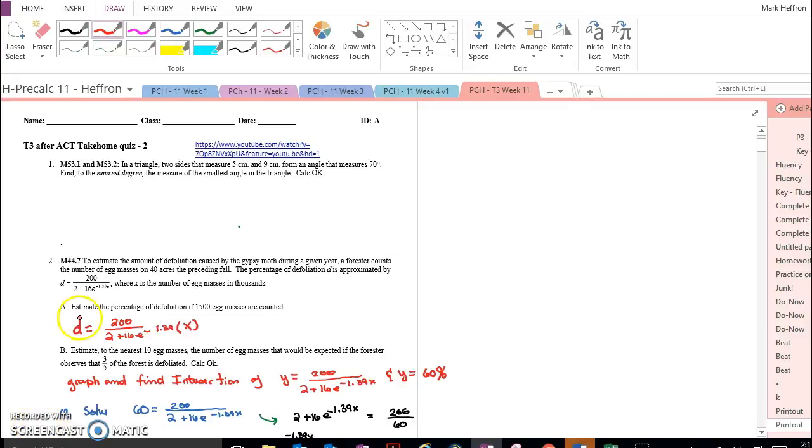In this problem, you've been asked to estimate the percentage of defoliation. The percentage of defoliation, D, is approximated by this equation. So that's where you start.